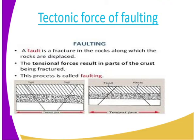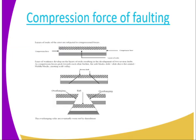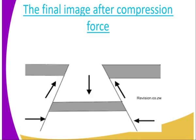You can see the difference between the tension force and the compression force — look at the second diagram. The lines of weakness are coming towards one another. When the compression force is applied, it causes the movement of land masses along one another; they are pulled towards one another, usually along a crack or a line of weakness. The masses of land move in opposite directions as shown below. You can see the line of weakness developing and how the displacement takes place.